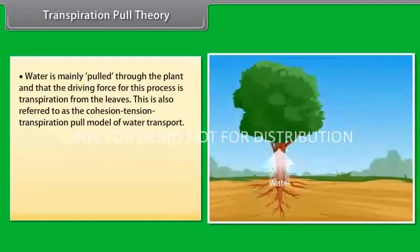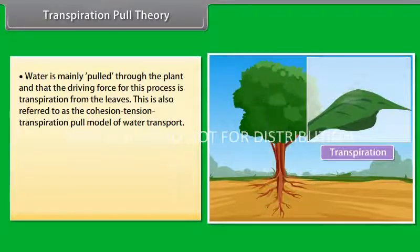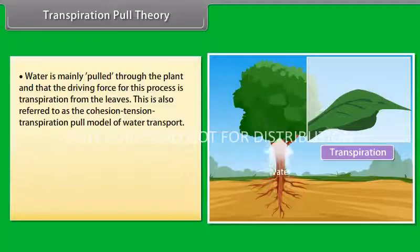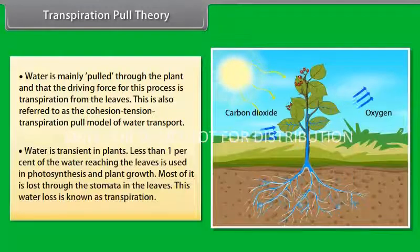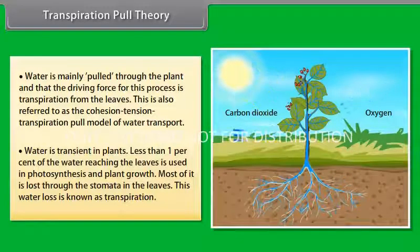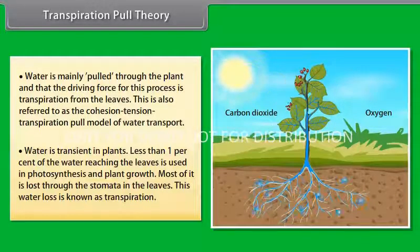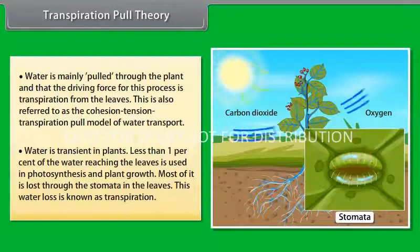Transpiration Pull Theory. In transpiration pull theory, most researchers agree that water is mainly pulled through the plant and that the driving force for this process is transpiration from the leaves. This is also referred to as the cohesion-tension-transpiration pull model of water transport. Water is transient in plants. Less than 1% of the water reaching the leaves is used in photosynthesis and plant growth. Most of it is lost through the stomata in the leaves. The water loss is known as transpiration.